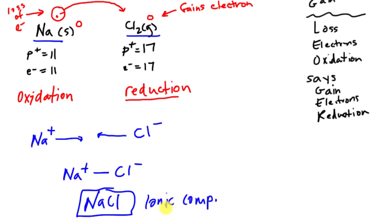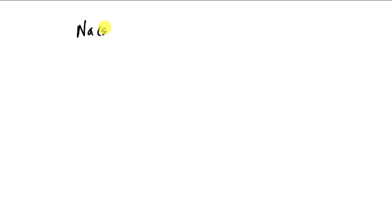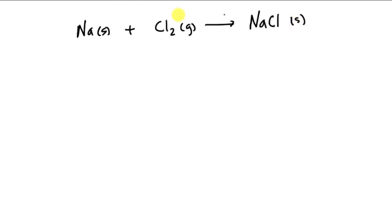The ionic compound we use in double replacement reactions actually comes from sodium coming near chlorine: one loses an electron and the other gains it. Written out, the reaction is: sodium solid plus chlorine gas yields sodium chloride solid. We write it as solid because there's no water, so nothing dissolves — this is different from a double replacement reaction.